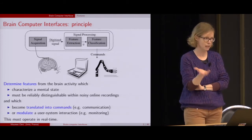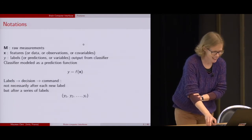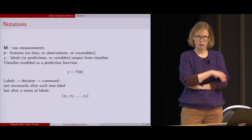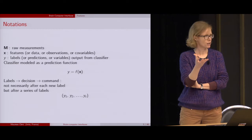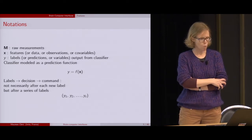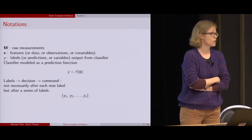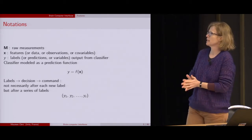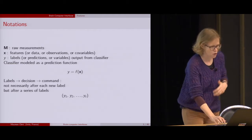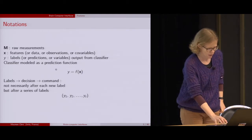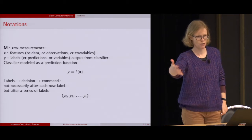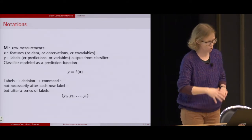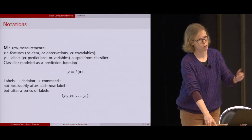One of the challenges is to do all this in real time, which means we have to be fast and efficient. To give some notations: M is the measurements coming from the device, X is the signal processing results — some features — Y are the labels that we attach to the features thanks to machine learning, and we can model the output of the classification as a prediction function F. The purpose is to get commands for some interface the user can use. We look at windows of data, and commands don't necessarily come at each individual window — sometimes we need to aggregate information across time before issuing commands.